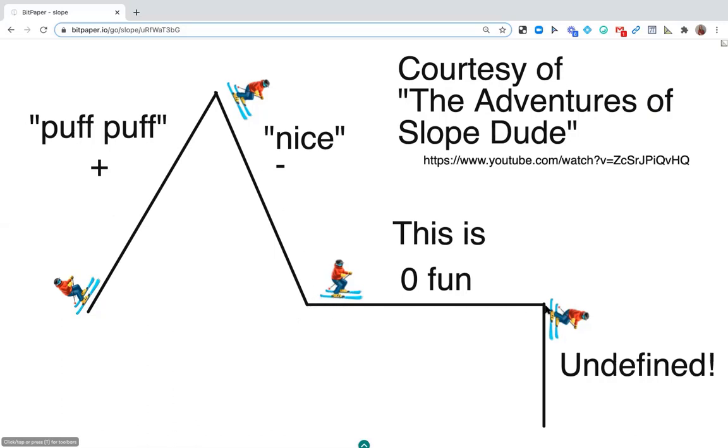Then if we have a horizontal line here, if you've ever gone snow skiing, you know that often you have to use your poles to push yourself because you're on a flat surface. So that's not very fun. So we say this is zero fun. So the slope of a horizontal line is zero. And then he falls off the cliff and he yells a terrible math word, and it's undefined. And those are his last words as he falls off the mountain. So that's the Adventures of Slope Dude.